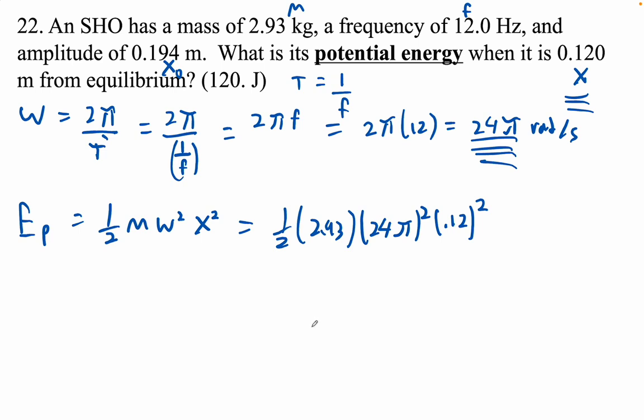Wow, I feel like we have no business getting the right answer that way, but we did. Our potential energy is 119.928. We only have three sig figs, so I guess we say 120 joules.